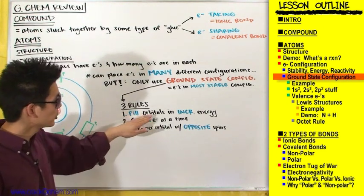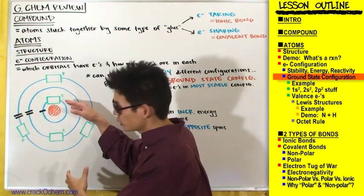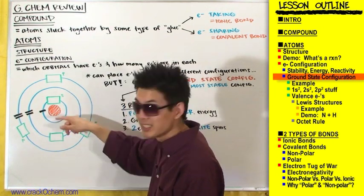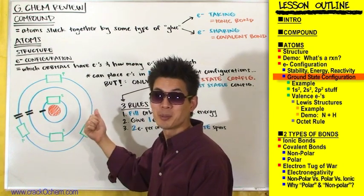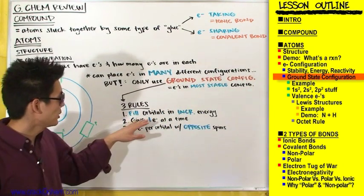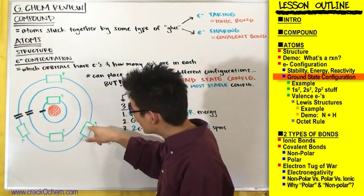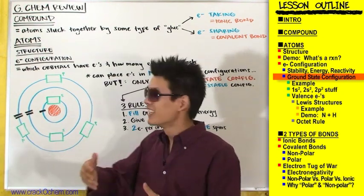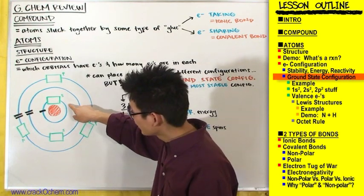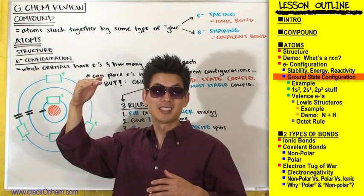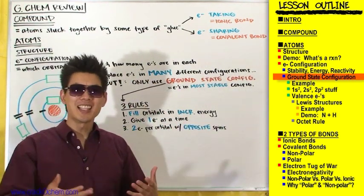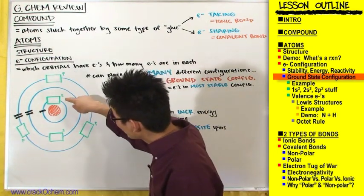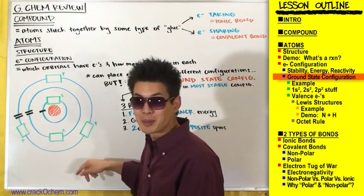Our first rule: fill orbitals in increasing energy. The closer you are to the nucleus, the lower in energy; the further away, the higher in energy. So you fill the lowest energy orbital first — the first electron ring closest to the nucleus — before moving outward. This is exactly like climbing stairs: you can't start at the top, you start at the bottom and work your way up.